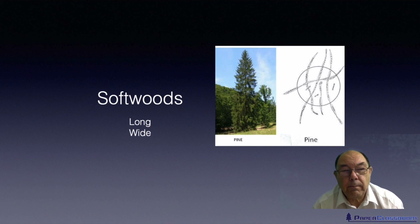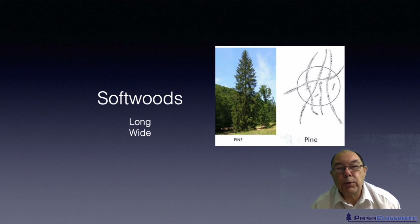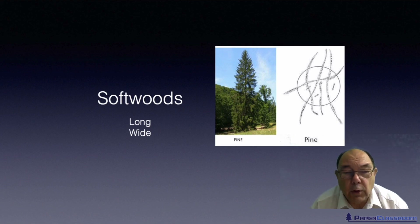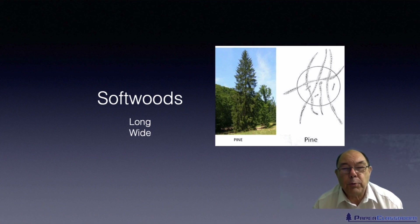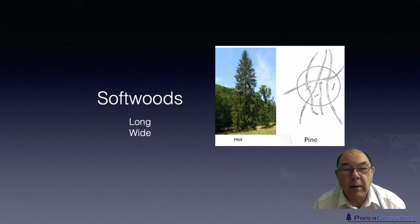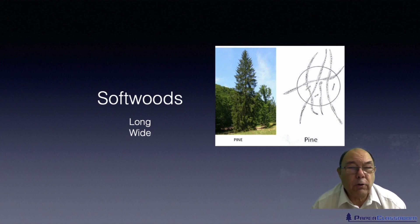Other than hardwoods we have softwoods. Softwoods are the conifers — the tree is cone shaped. We're talking about things like pine, fir and spruce. A typical softwood fibre is up to about four millimetres long, twice the size of the hardwood fibre, and up to about 40 microns wide — about twice as wide as a hardwood fibre.